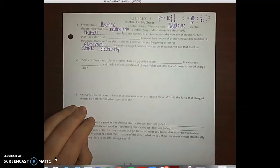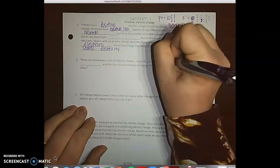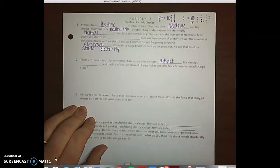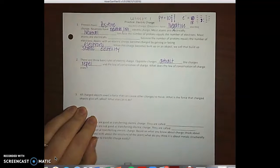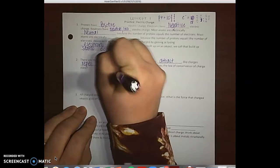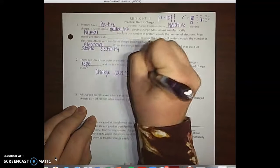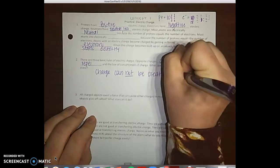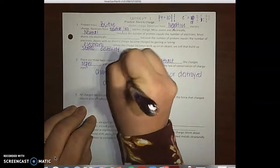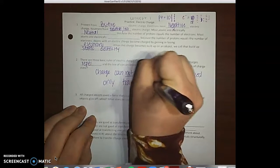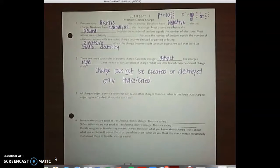Number two says there are three basic rules of electric charge: opposite charges attract, like charges repel, and the law of conservation of charge. What does the law of conservation of charge state? It states that charge cannot be created or destroyed, only transferred. So once you have static electricity or any type of charge you cannot create it or destroy it, you can only transfer it between atoms.